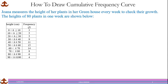Joanna measures the height of her plants in her greenhouse every week to check their growth. The heights of 80 plants in one week are shown in the frequency table below. When you pick a number from the frequency, say number 9, it means that 9 of the plants measure between 30 and 40. We can't be entirely sure of the exact measurement of each of the 9, but we know 9 plants measure between 30 and 40.